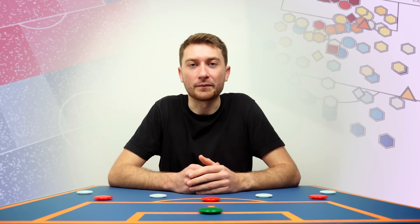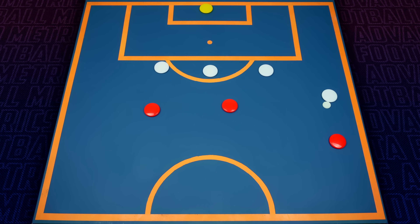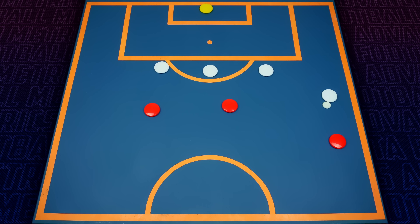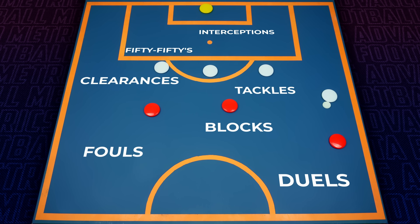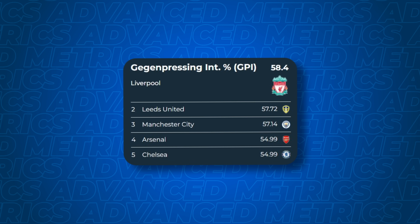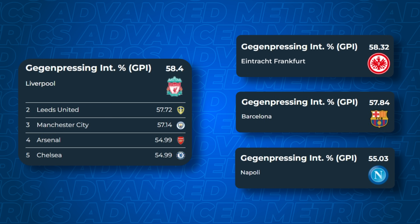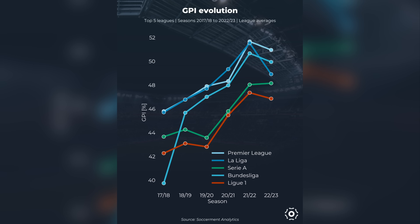The innovations in pressing metrics don't end there, and there's a new metric that looks to measure counter-pressing intensity. GPI is the brand new kid on the block, and helps us understand which teams are the most aggressive once they lose possession. It works by looking at a team's defensive actions in the highest 40% of the pitch in the first 6 seconds after losing possession. Defensive actions include fouls, interceptions, tackles and aerial duels — anything that prevents the opposition moving up the pitch. Liverpool often dominate this chart in the Premier League, with Frankfurt, Barcelona and Napoli also featuring prominently. League averages for counter-pressing intensity have significantly increased in the past 6 seasons, showing a shift towards this more aggressive approach to regaining possession.